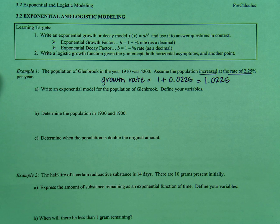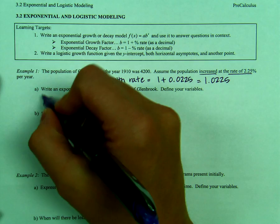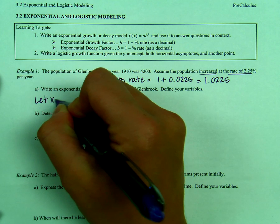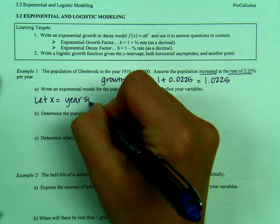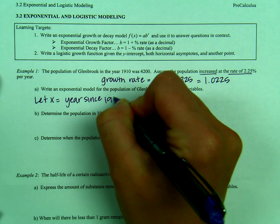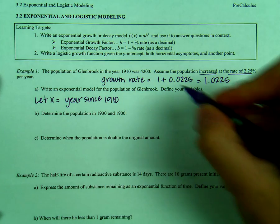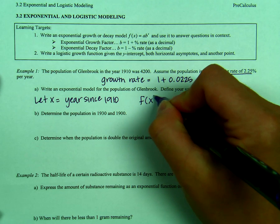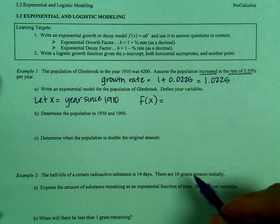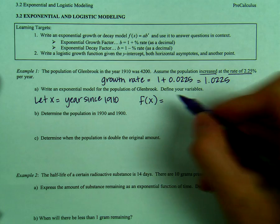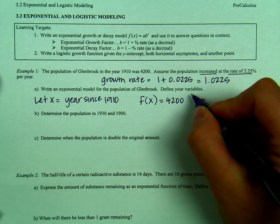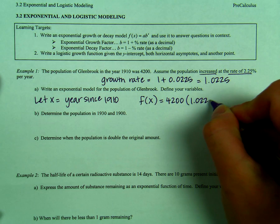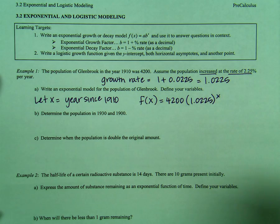We're asked to write an exponential model for the population of Glenbrook, define our variables. So let's let x equal the year since 1910. So our function here is going to be f of x equals our initial population in 1910, which is 4,200, times our growth rate, 1.0225 to the x power.